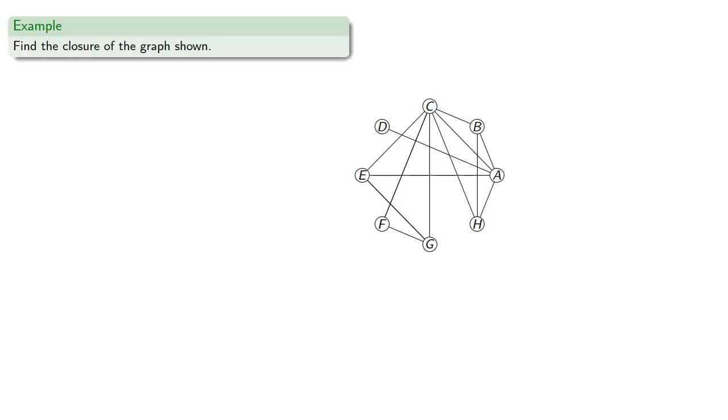So for example, let's try to find the closure of this graph. There are 8 vertices, so if two non-adjacent vertices have degree sum 8 or more, we'll join them.